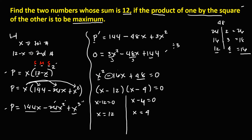So x equals 4. Since the sum of the two numbers is 12: if x₁ equals 12, then x₂ equals 0, because 12 plus 0 equals 12. For the other solution, if x₁ equals 4, then x₂ equals 12 minus 4, which is 8. So the two pairs are (12, 0) and (4, 8).